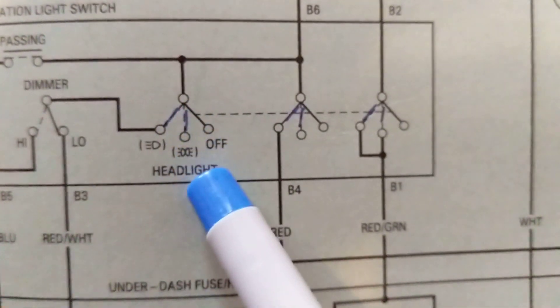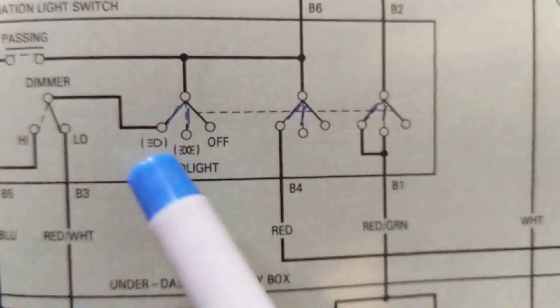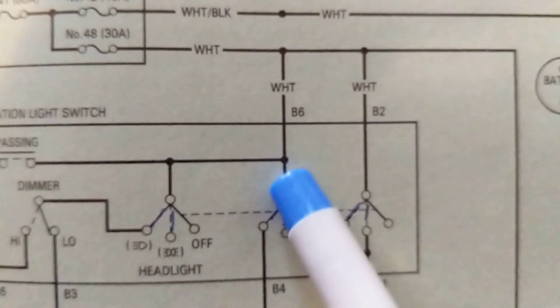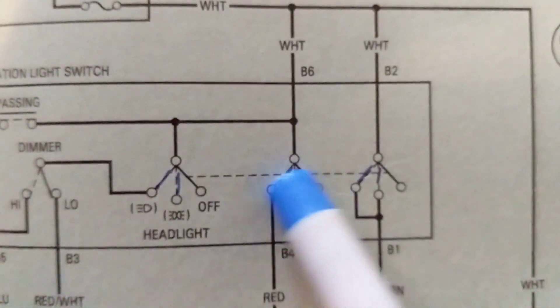Therefore it will go over here. The headlamps, and this is for high beam. Okay, white goes to white to this side of the switch.